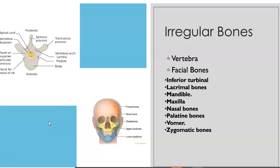Irregular bones are, as their name suggests, irregular. They are more complex in shape, and therefore it is harder for them to fit within the other classifications.